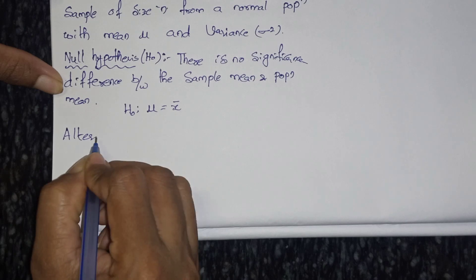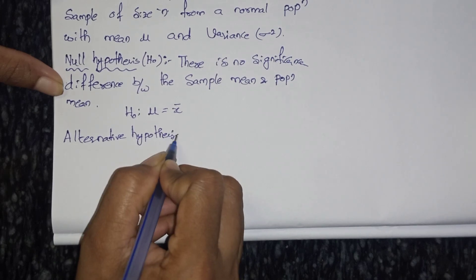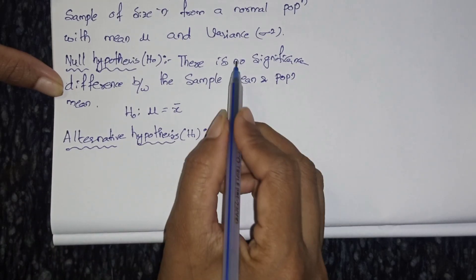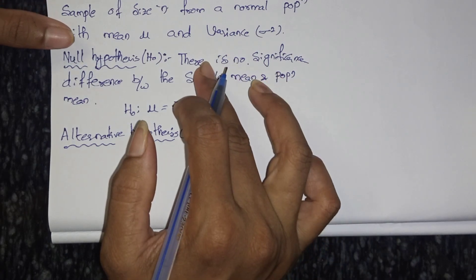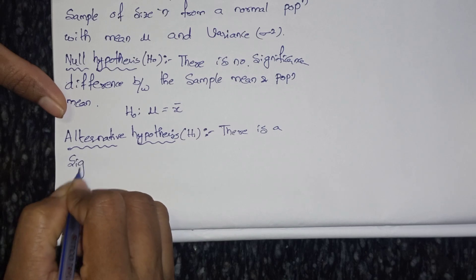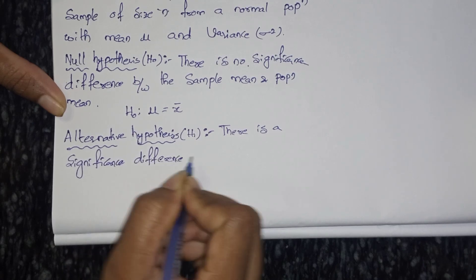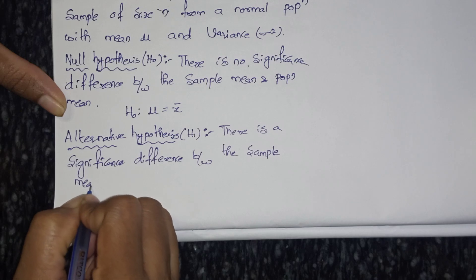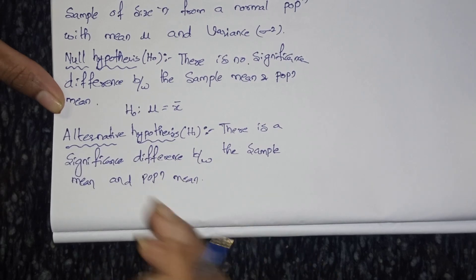Next, alternative hypothesis. The alternate is the opposite of the null hypothesis. We denote it H1. The statement is: there is a significance difference between the sample mean and population mean.